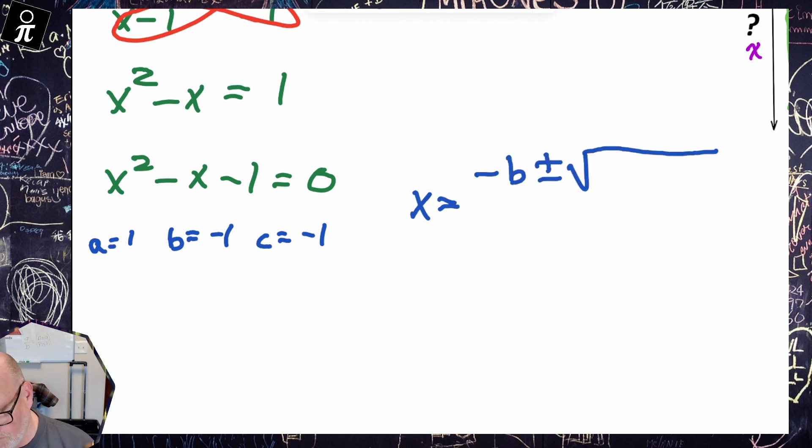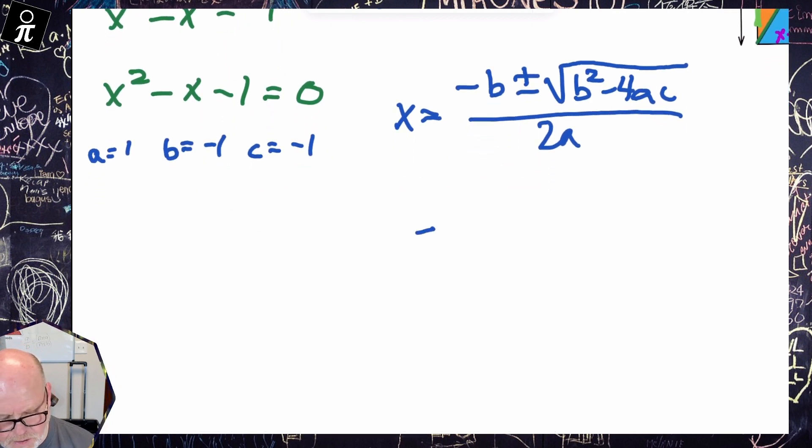And then I can see, okay, so negative B, well if B is negative one, then negative B is going to be positive one, plus or minus square root of...